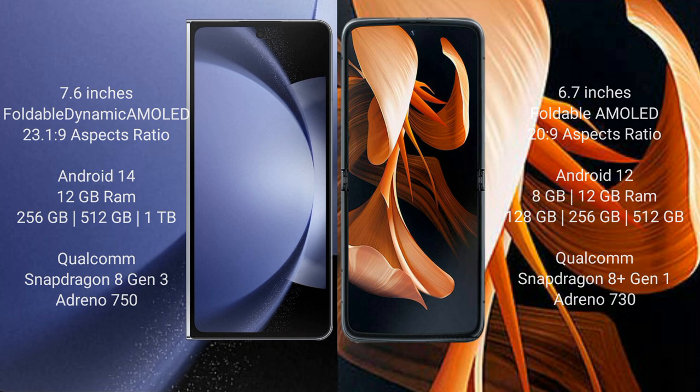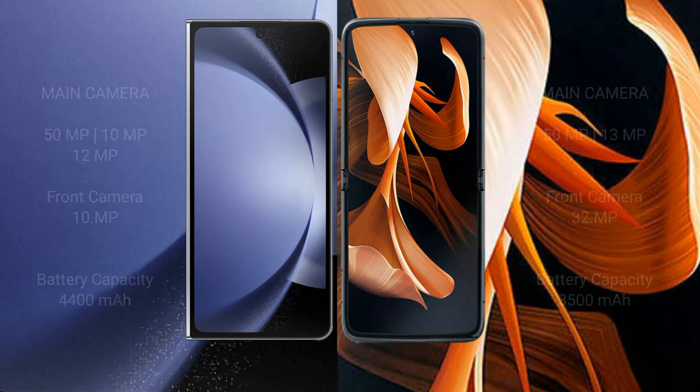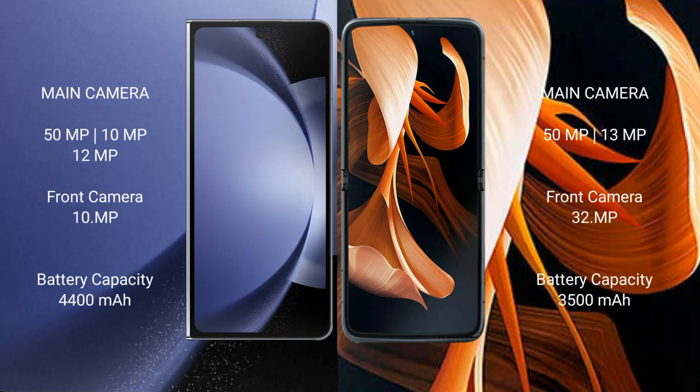Samsung Galaxy Z Fold 6 features a triple rear camera setup: 15MP plus 29MP plus 12MP, with a 29MP front camera. Motorola Razr features a dual rear camera setup: 15MP plus 39MP, with a 32MP front camera.